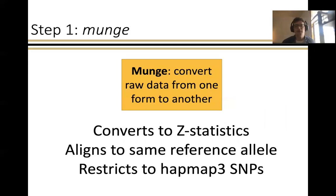The first step is to MUNGE the data, where MUNGE refers to the general process of converting raw data from one form to another. MUNGE is primarily converting the summary statistics to Z statistics, aligning all the summary stats to the same reference allele, and restricting them to HapMap3 SNPs — both because these tend to be well imputed, and even with just those 1.1 million HapMap3 SNPs, you get a reasonable estimate of heritability. Sometimes people are concerned when they go from 8 to 10 million SNPs down to about 1 million after MUNGE, but this isn't cause for concern — that is enough to get an accurate heritability estimate using the LDSC equation.